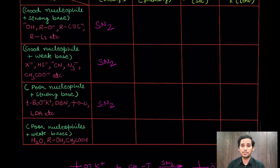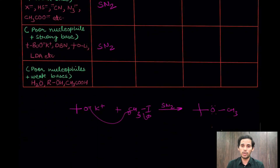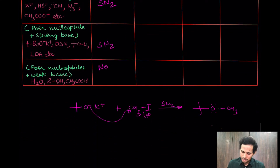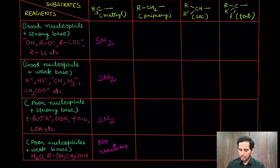The last category for methyl is poor bases and poor nucleophiles — solvents. In this case, do not expect methyl to react, because it cannot undergo SN1, it cannot undergo E1, and these reagents are too weak to attack. Expect no reaction, or if any reaction happens, the pace will be unbearably slow.